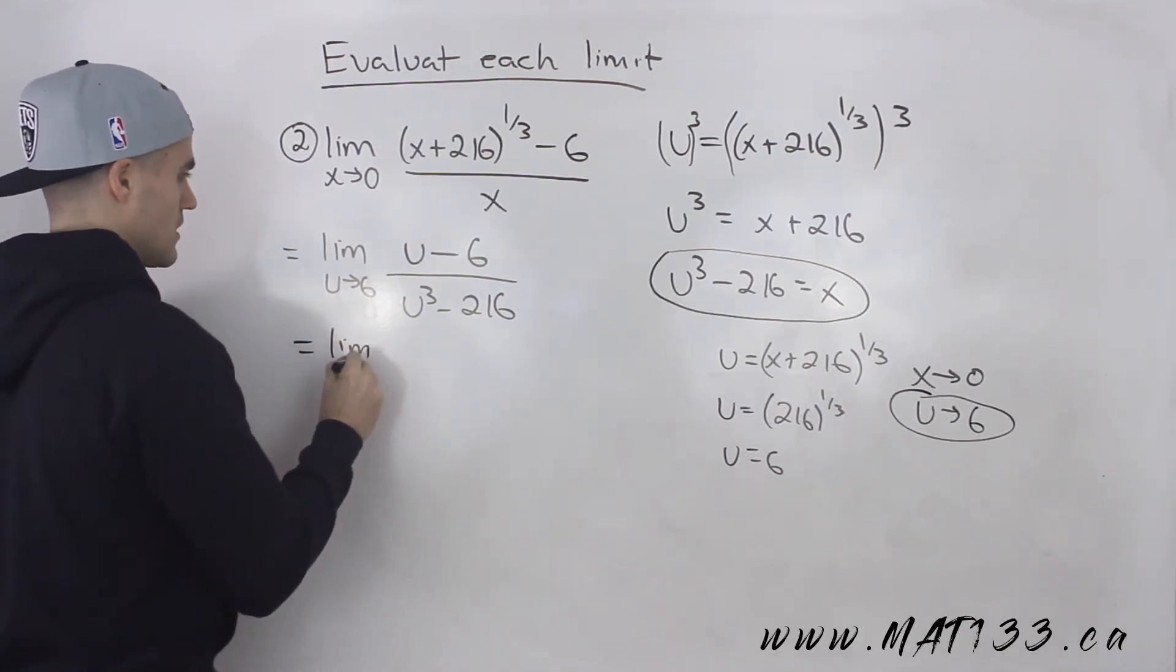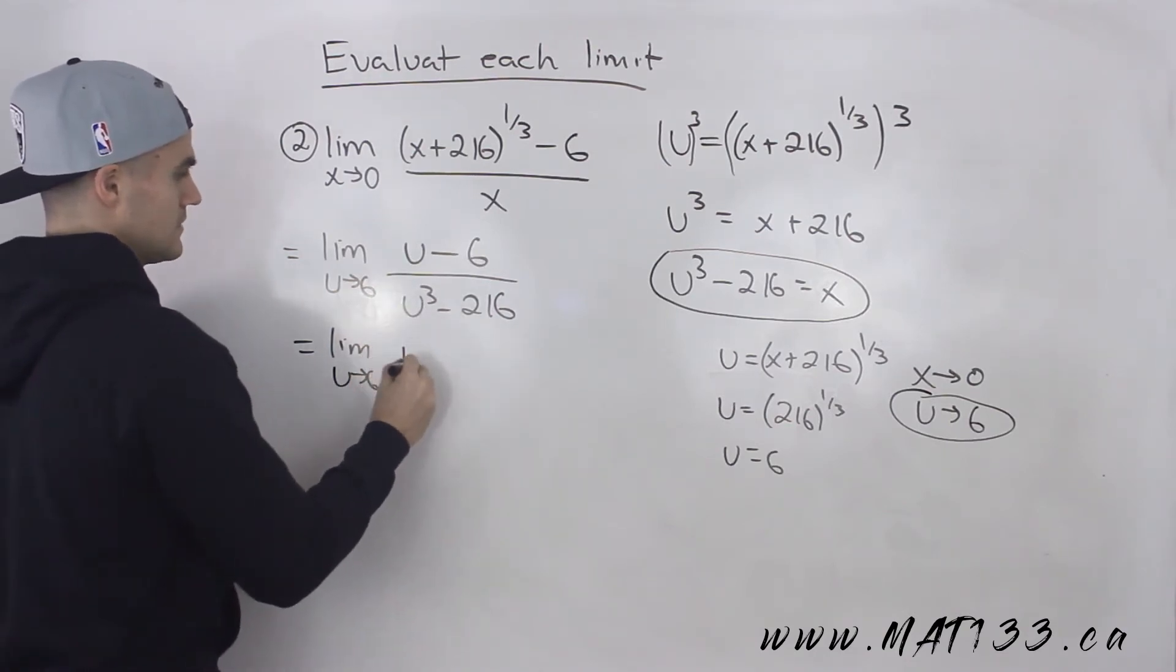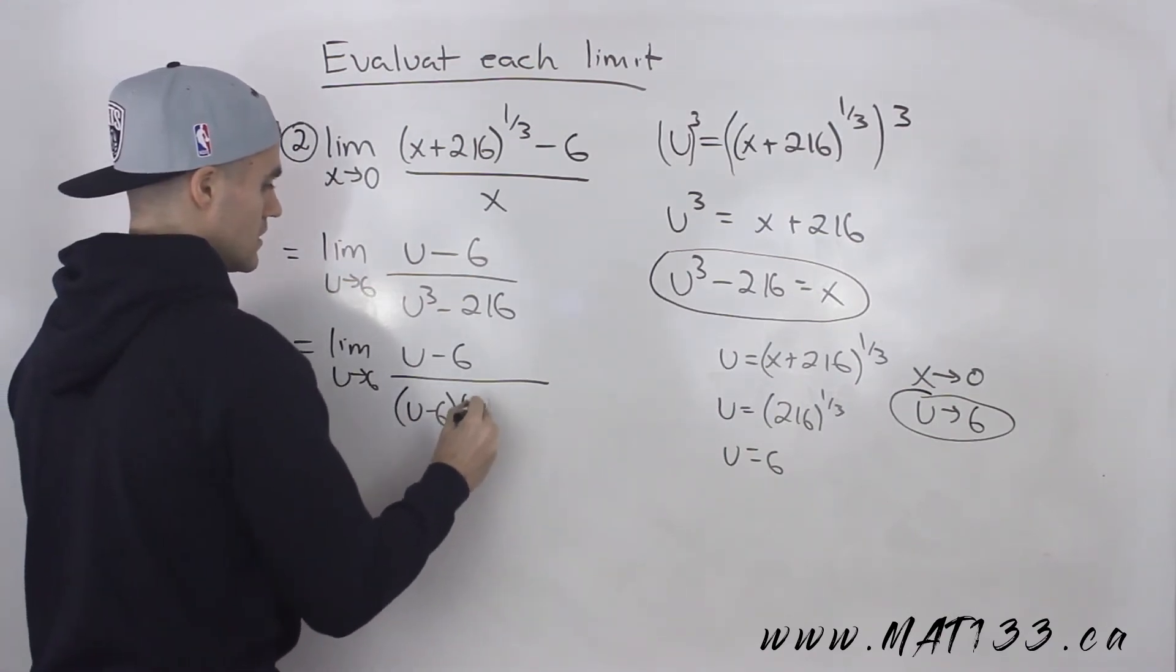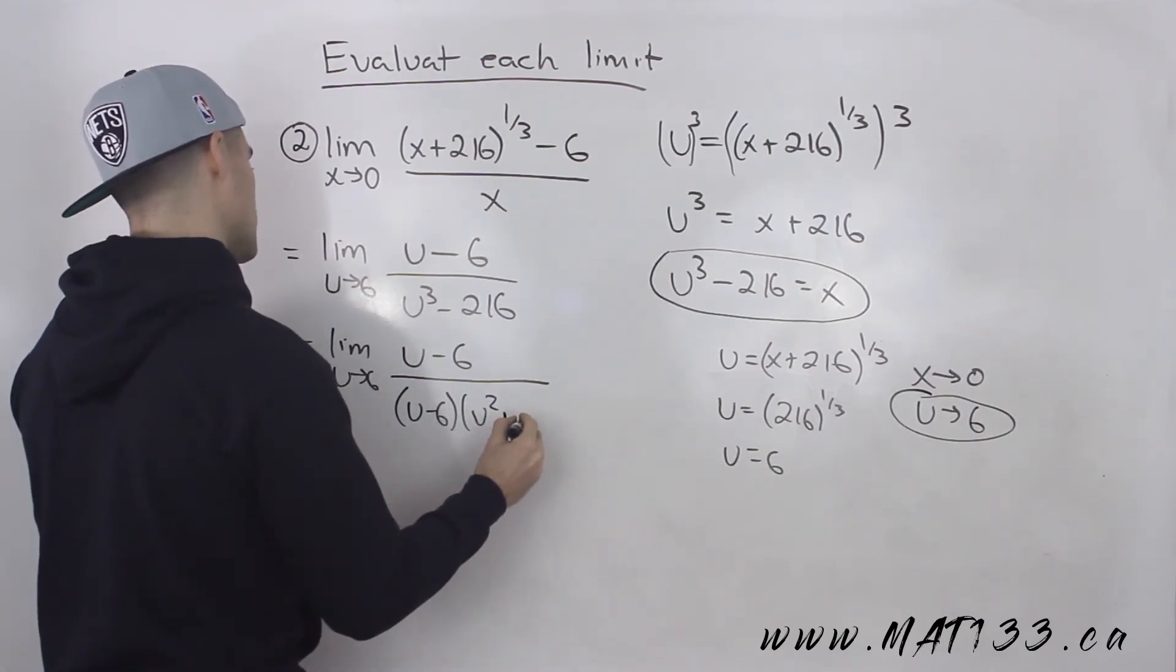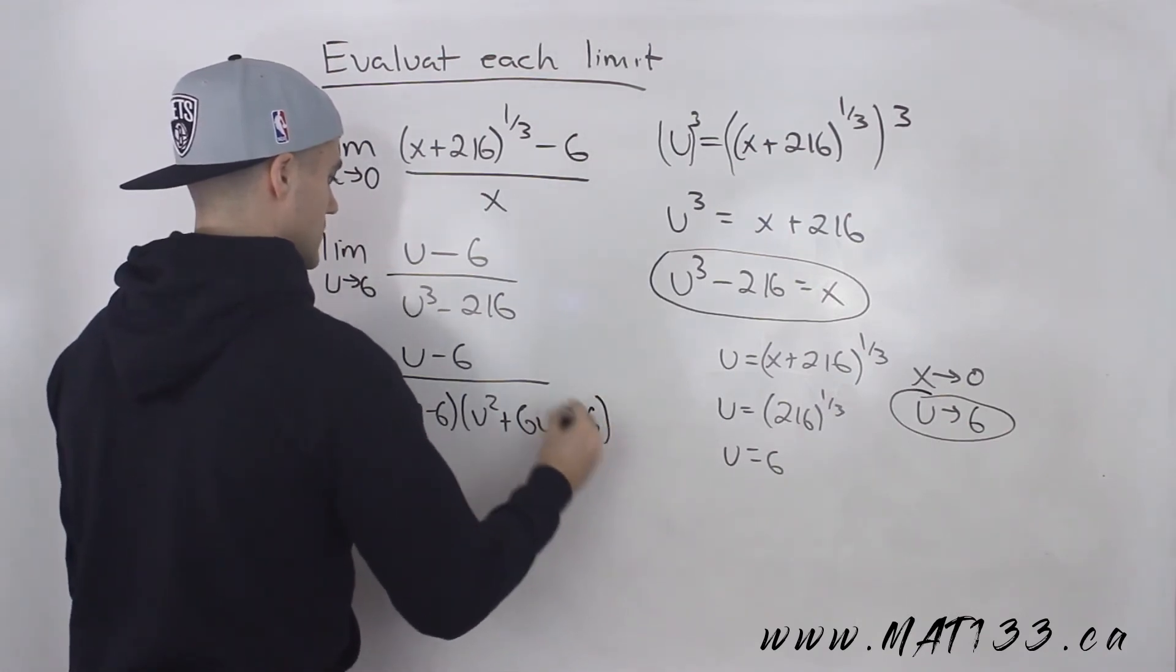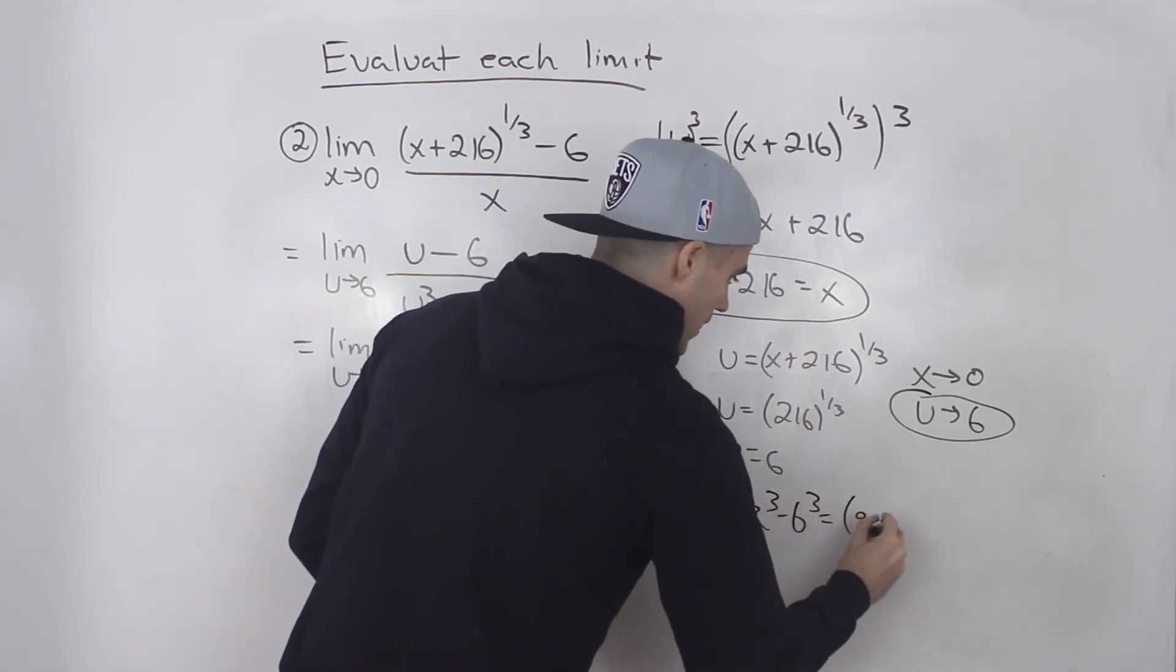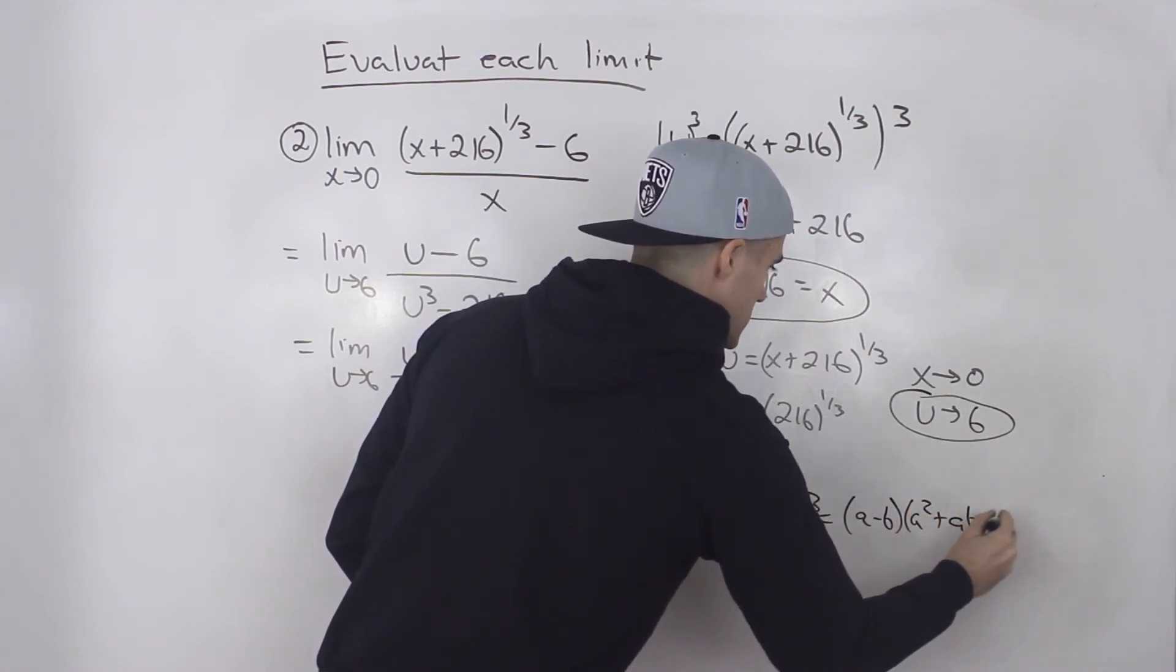And that u to the power of three minus 216, that is a difference of cubes. So that factors into u minus six, u squared plus 6 times u, 6u plus 36. Right? If you remember, difference of cubes is equal to a minus b times a squared plus ab plus b squared.